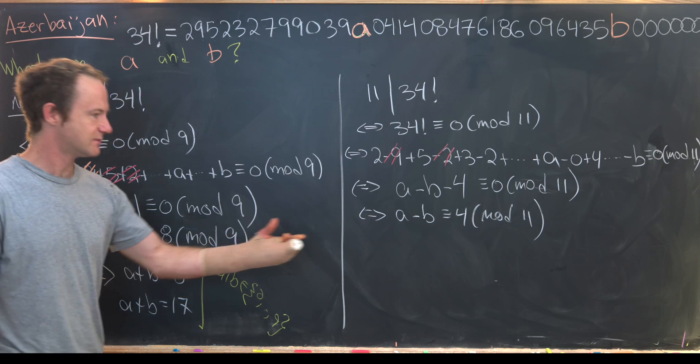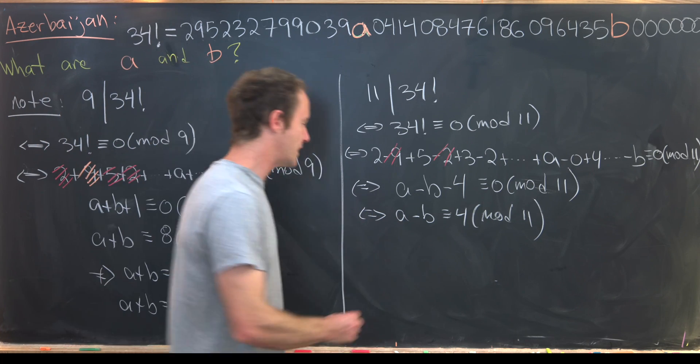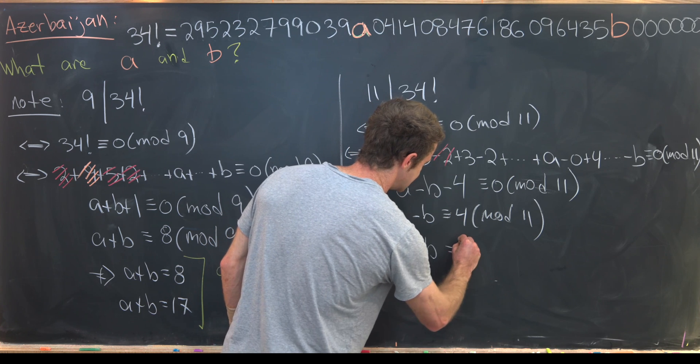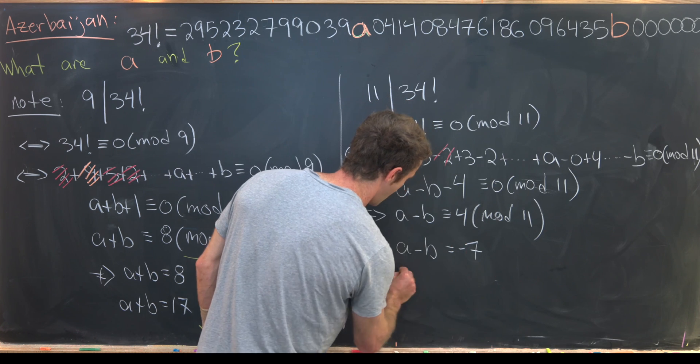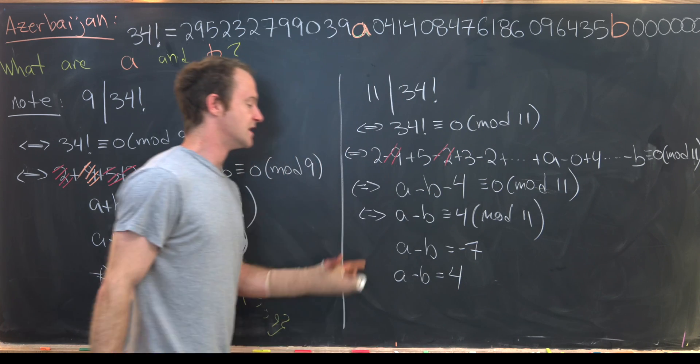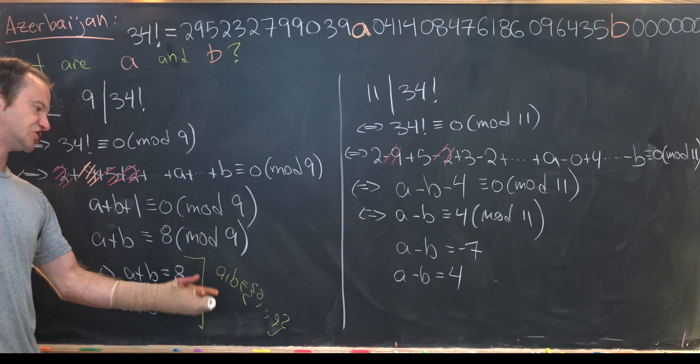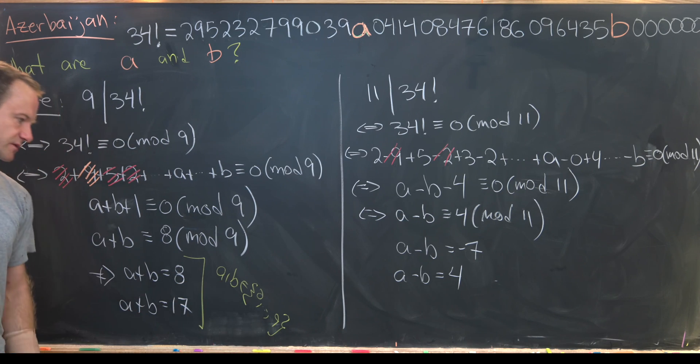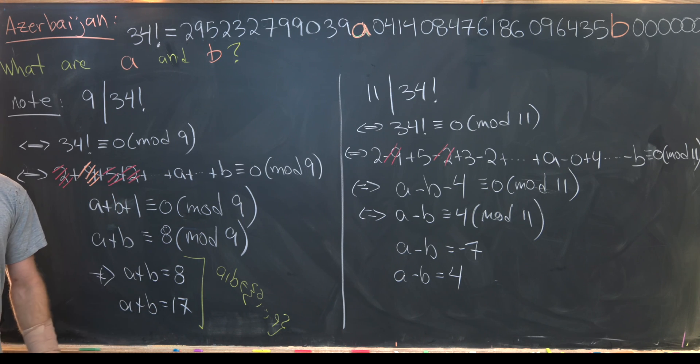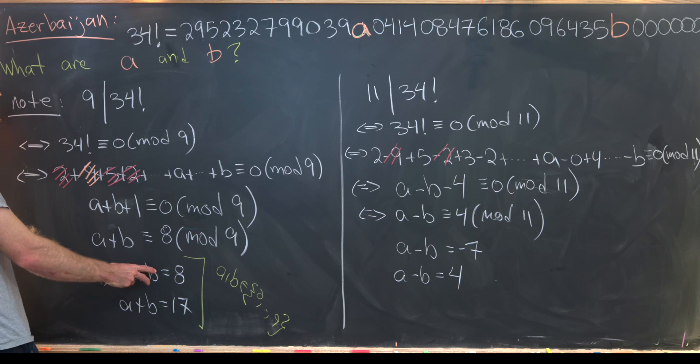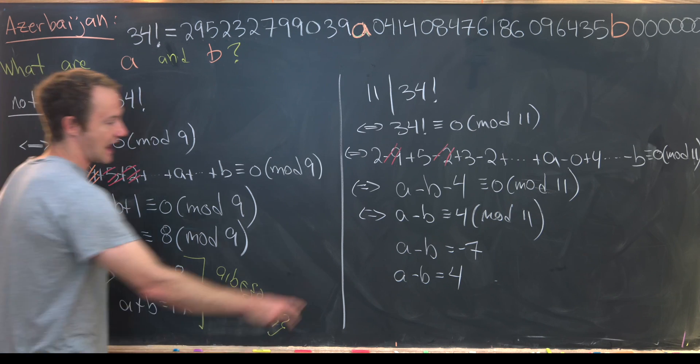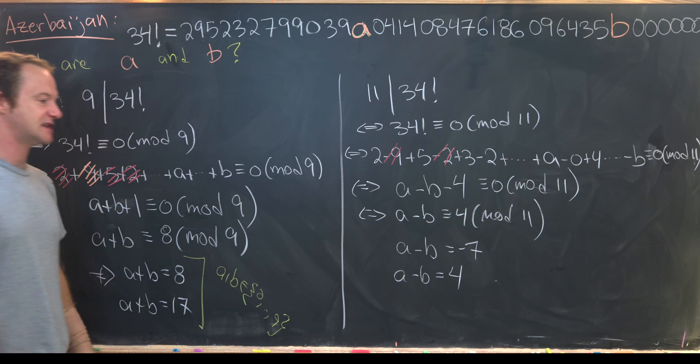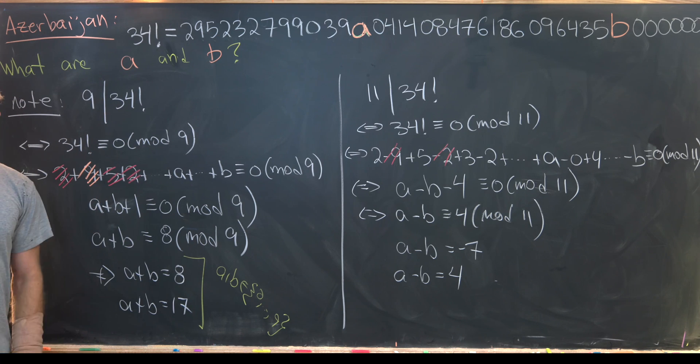And then through a similar argument over here we can see that a minus b is equal to negative 7 or a minus b is equal to 4. So again those are the only achievable values that are congruent to 4 mod 11 given this restriction on a and b. So that gives us four possibilities. We can choose a plus b to be 8 or 17 and a minus b to be negative 7 or 4. So let's get rid of this on the board and then we'll analyze each of those possibilities.